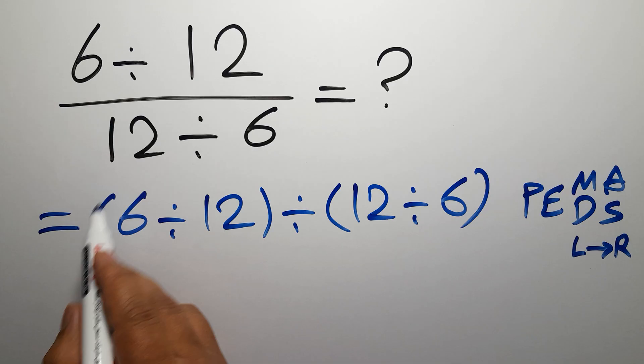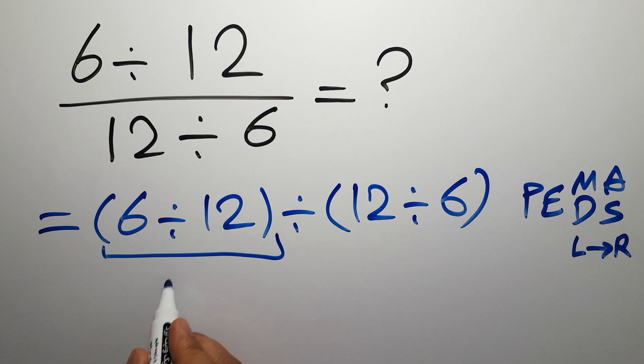So here first we have to do these parentheses. Inside these parentheses we have 6 divided by 12. We can write 6 over 12, and 6 divided by 6 gives us 1 and 12 divided by 6 gives us 2.